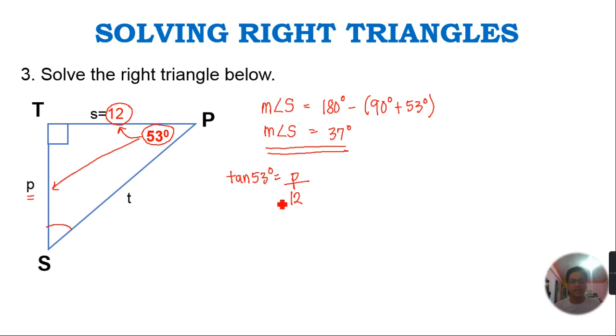We just cross multiply, so this will be 12 times tangent 53 degrees equals P. Just type in your calculator, so the value for this will be P equals 15.9, one decimal place.